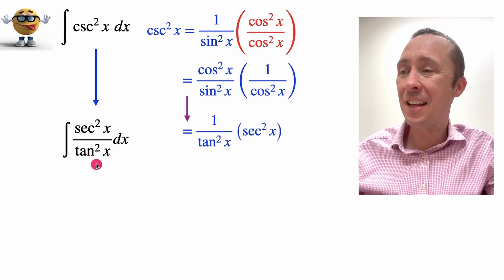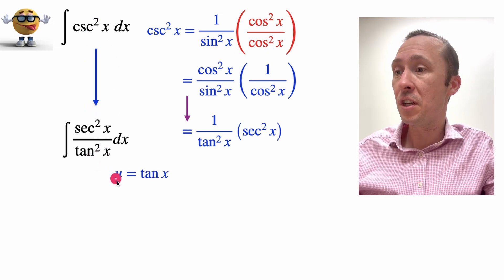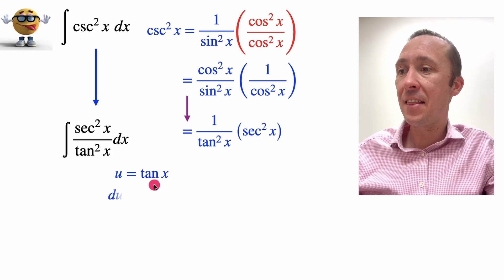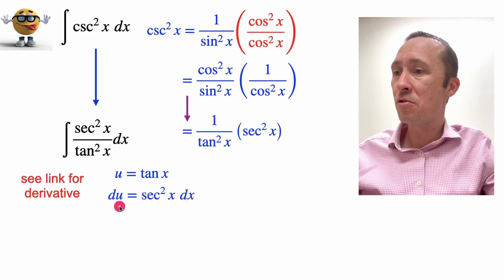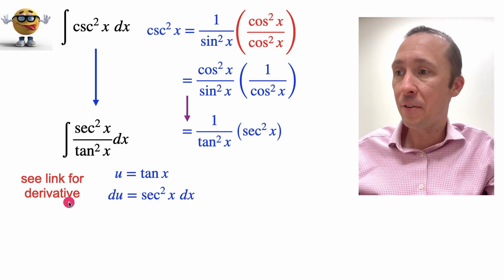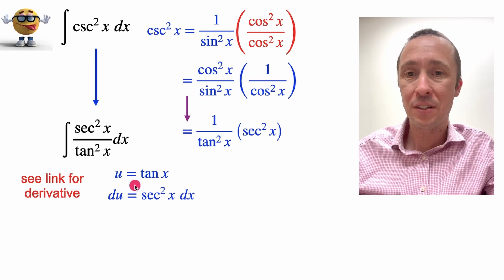And this might look like things got a little more complicated, but it's actually easier. If we use a u-substitution where we set u equal to tan x, and then if we take the derivative, the derivative of tan x is secant squared x. You can check out the link for the derivative on how I did that, but it's a standard derivative to know.